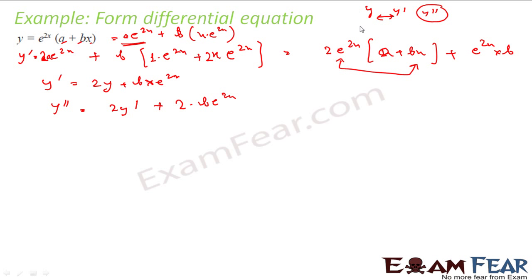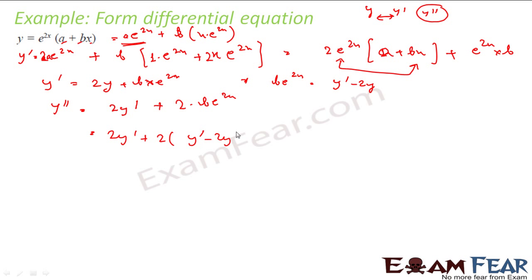I have to find a and b using these equations. From the equation for y dash, b·e^(2x) is nothing but y dash minus 2y. Replacing that here, y double dash becomes 2·y dash plus 2(y dash minus 2y). Rearranging, this becomes y double dash minus 4·y dash plus 4y = 0, and that is my answer.